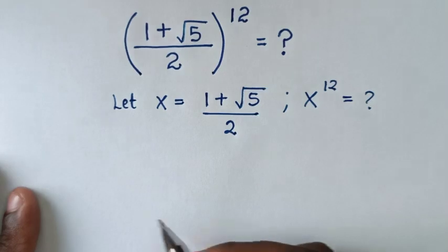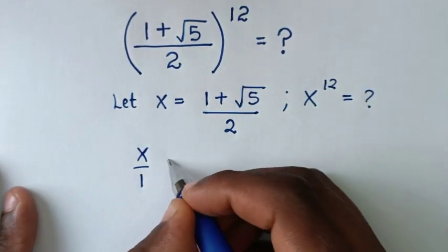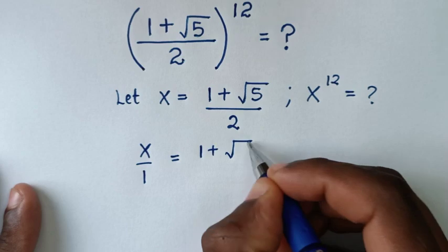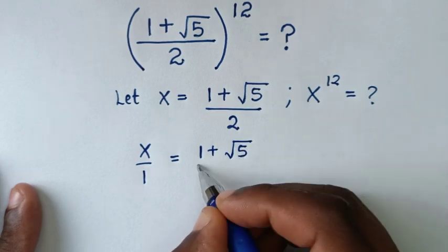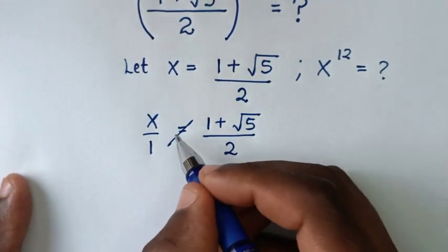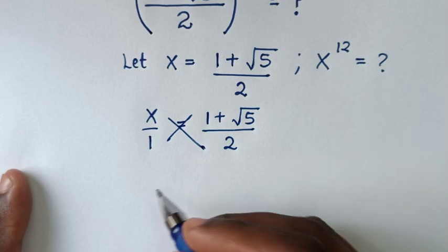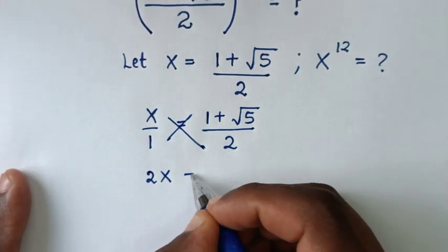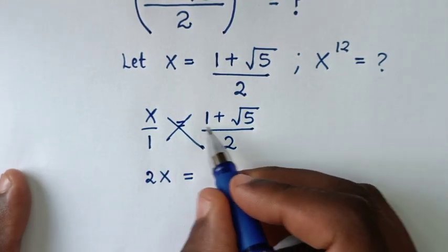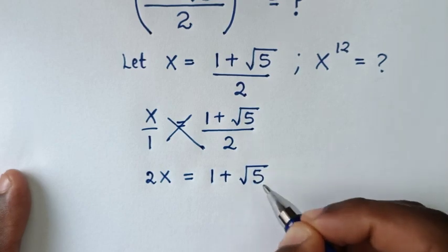From here, x is the same as x over 1, which is equal to (1 plus square root of 5) over 2. Then we'll cross multiply, so it will be x times 2, giving 2x, equal to 1 times (1 plus square root of 5), so 2x equals 1 plus square root of 5.